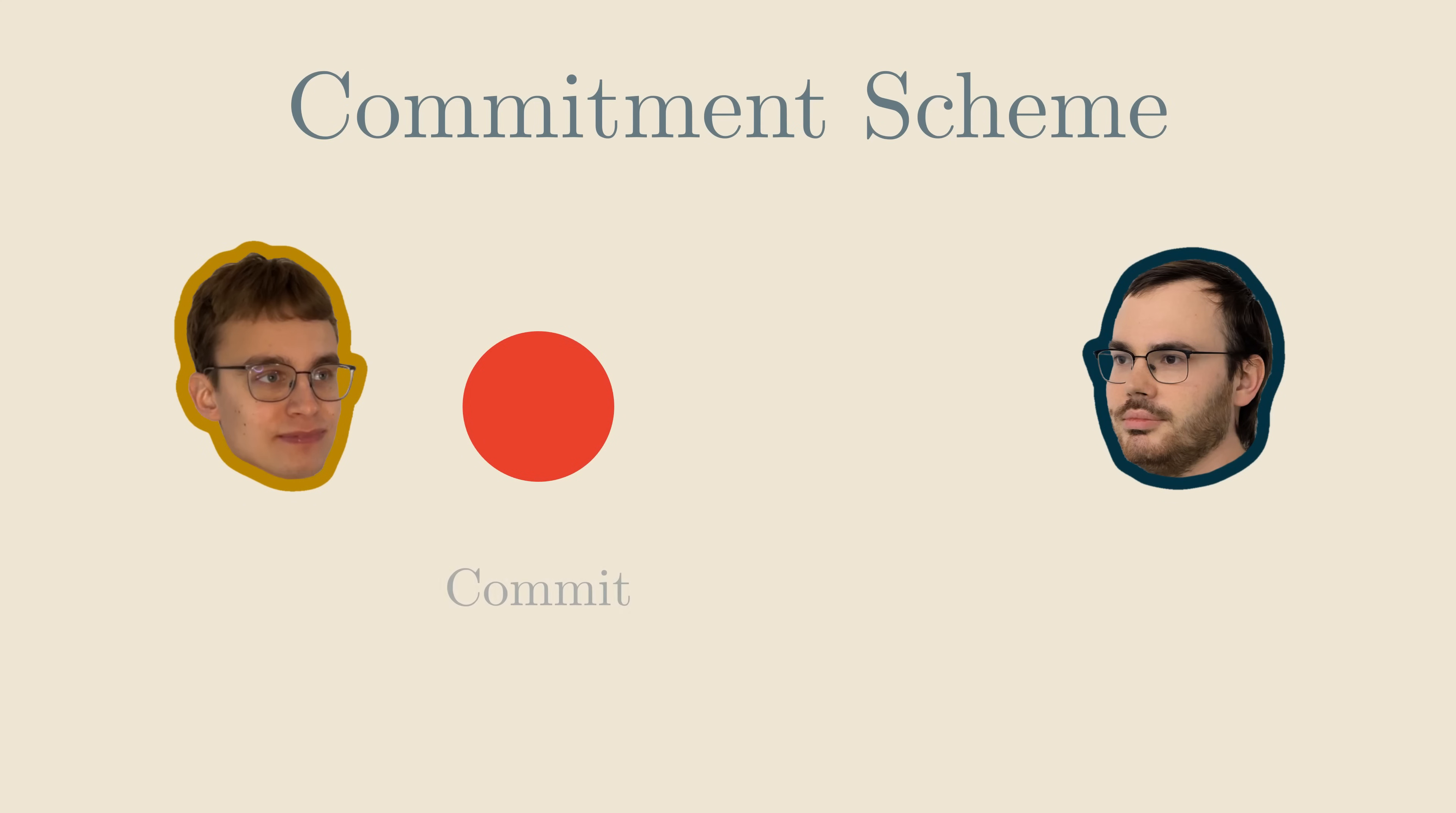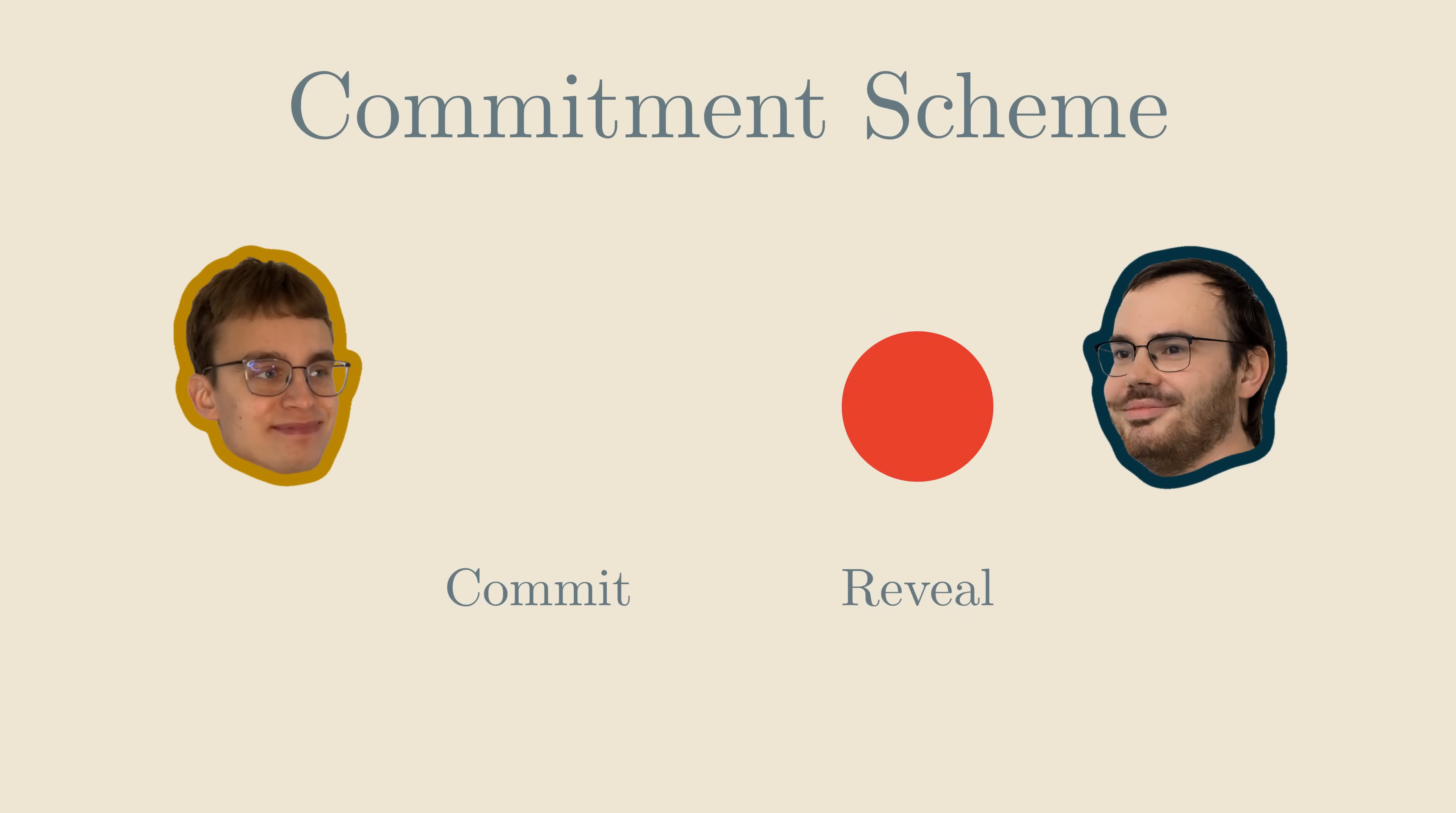But what if we live in different places? If we don't want to rely on sending boxes and keys back and forth with the post, we'll have to implement them using software. This can be done using what cryptographers call a commitment scheme. Such a scheme has to support two operations. Commit, which corresponds to locking a color in a box and sending it to the verifier. And reveal, which is like sending the verifier a key so that he can open the box.